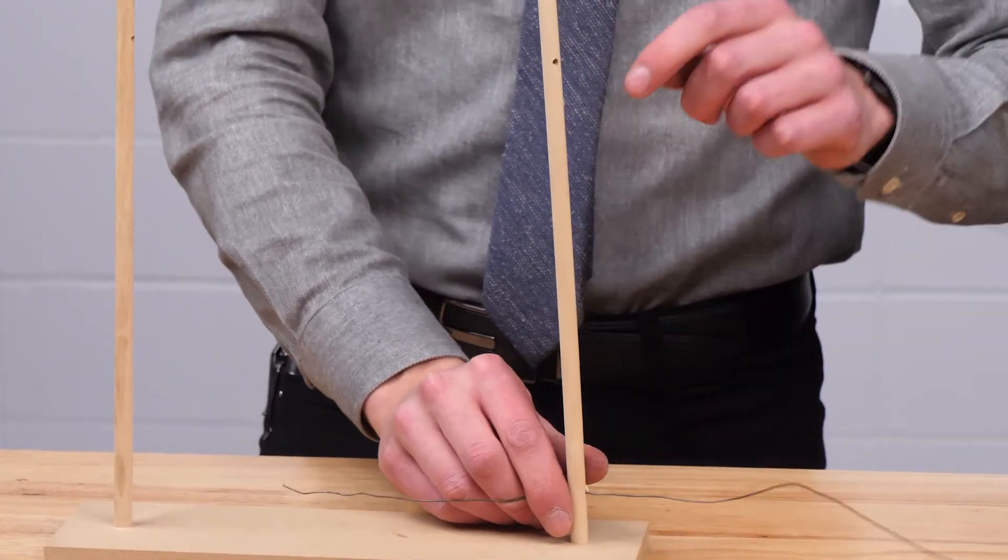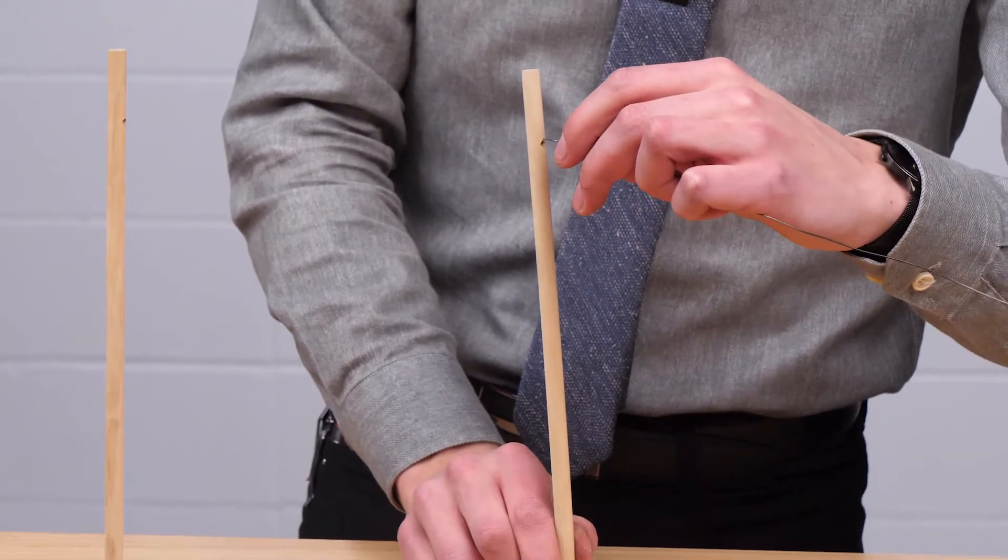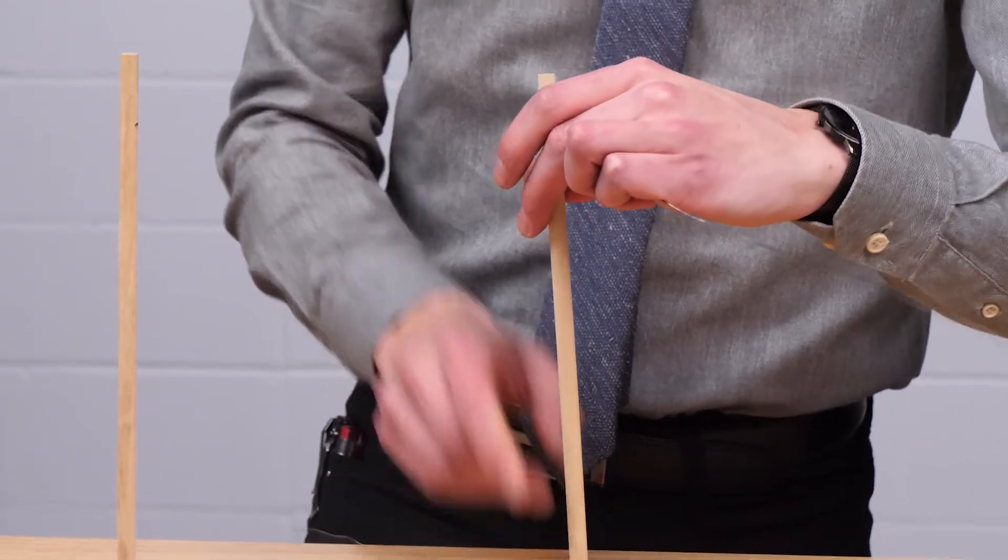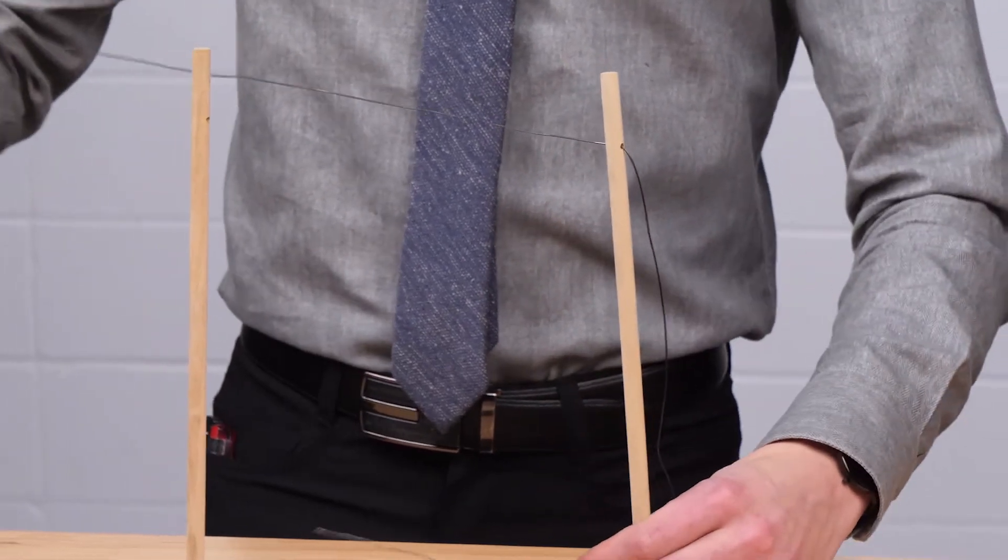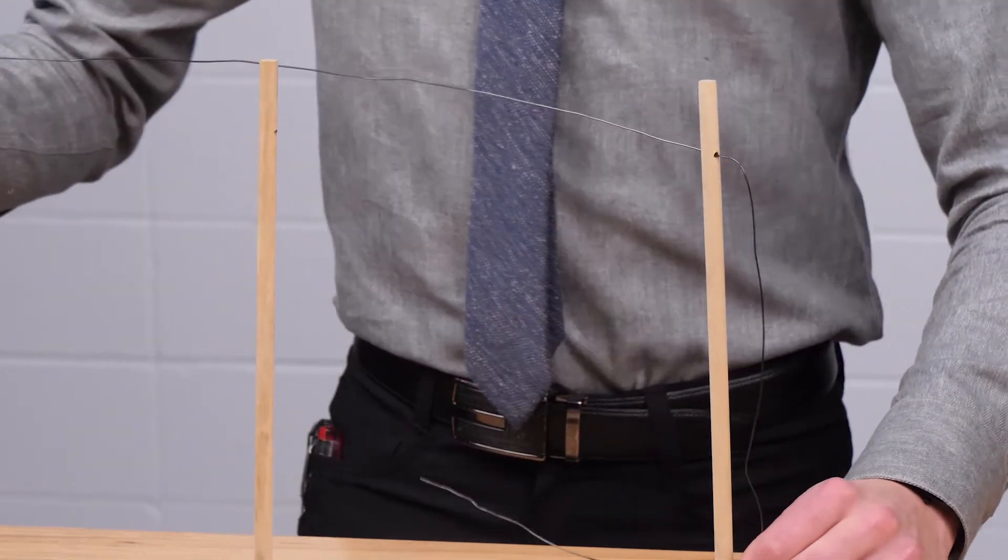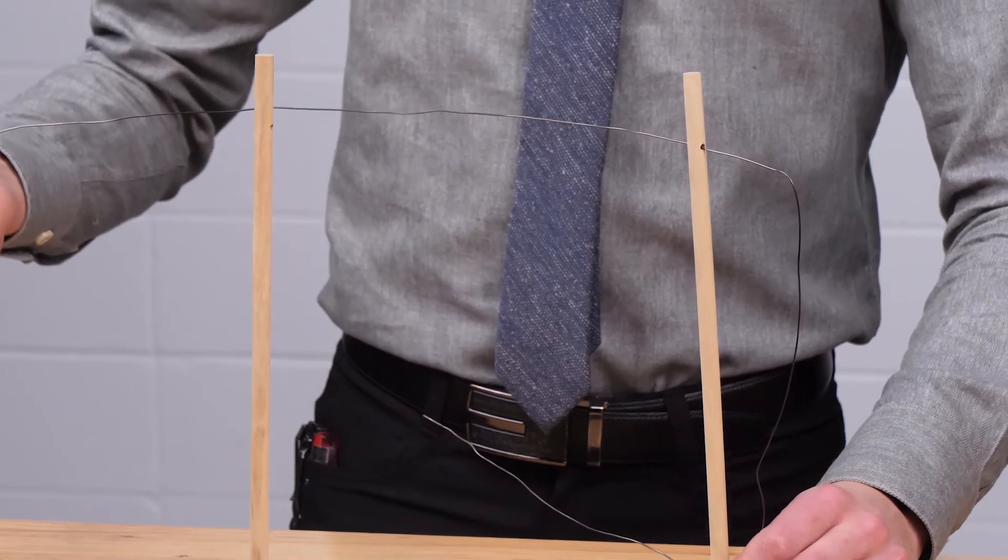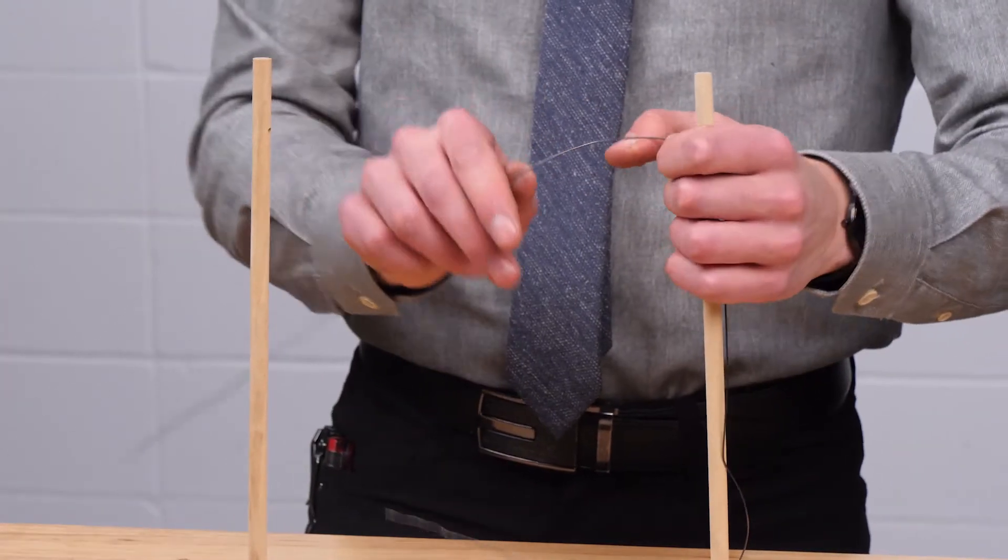Next, we're going to thread it through the top of the same dowel just like that, and here is where you can get creative. You can put your own little design or your own maze for friends to follow. I'm just going to do a simple S shape.